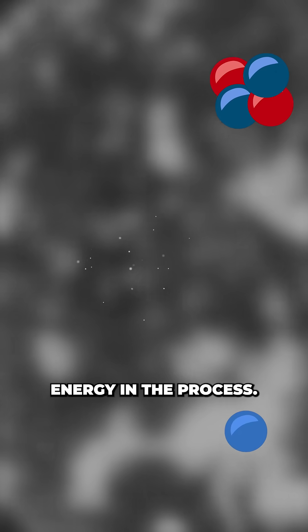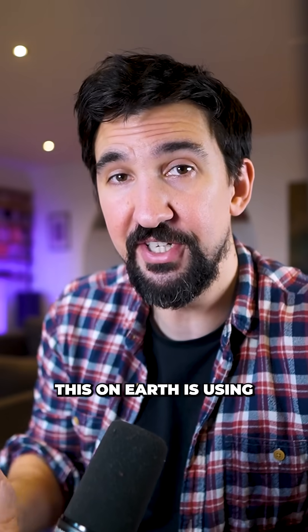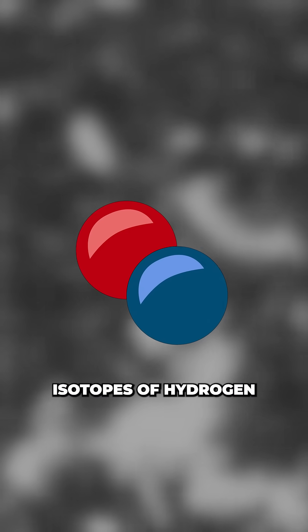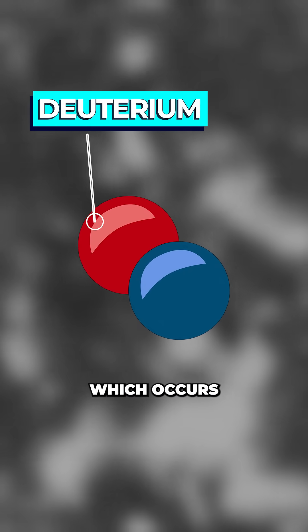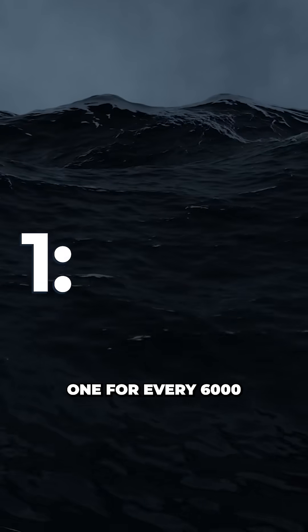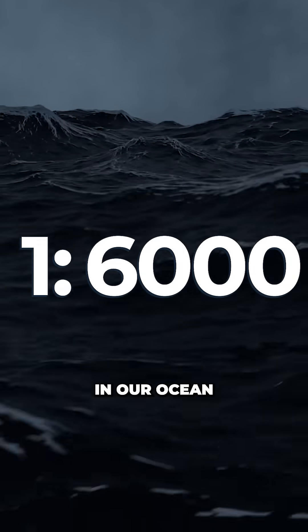where it collides together hydrogen to form helium and releases energy in the process. Our best guess as to how to achieve this on Earth is using heavy isotopes of hydrogen like deuterium, which occurs naturally on Earth at a ratio of about 1 for every 6000 atoms of hydrogen in our ocean.